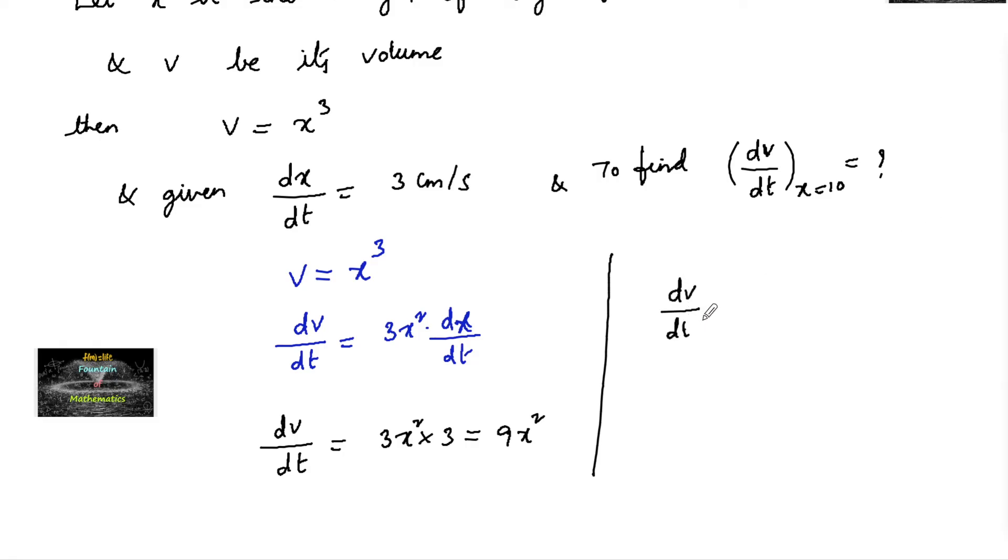The rate of change of volume when the edge is 10 cm. When x is equal to 10 is equal to 9 x 10 square. That is 9 x 100. That is 900 cubic cm per second.